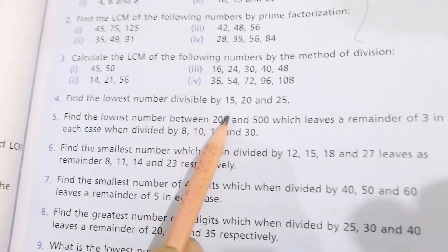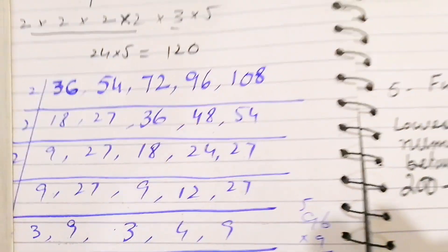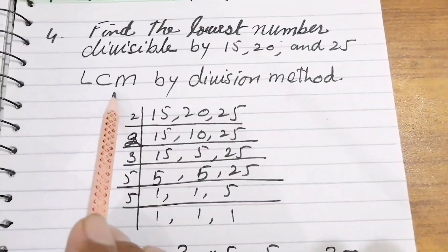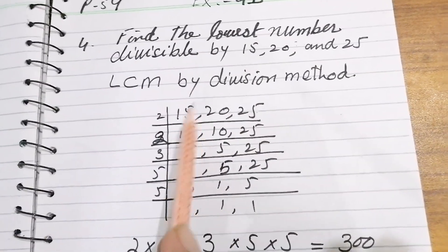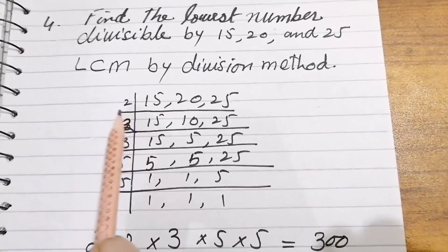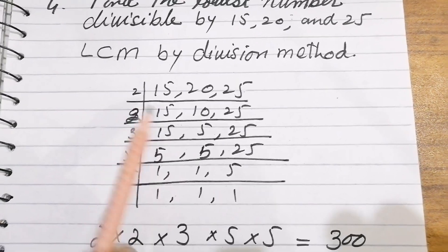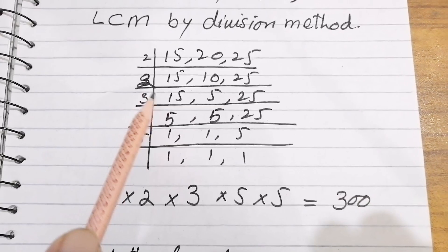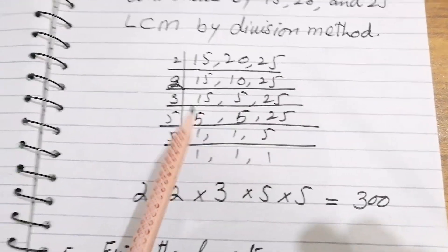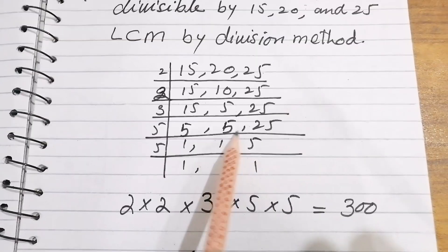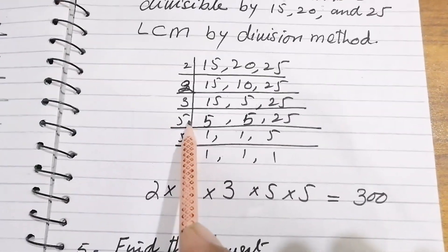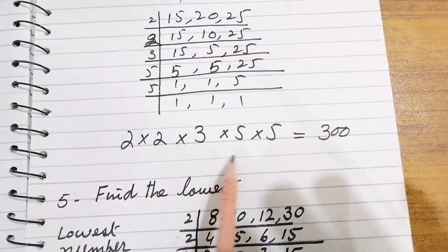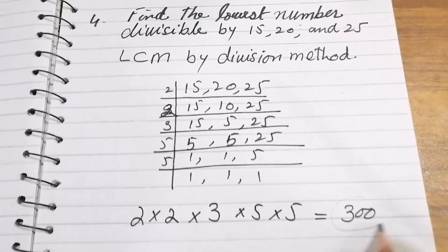Question 4: find the lowest number divisible by 15, 20, and 25. We calculate the LCM by division method, starting with 2. 2 divides 20; 25 and 15 stay as not divisible by 2. Continuing the division process with 5, then again by 5, we multiply all the factors and get 300 as the answer.